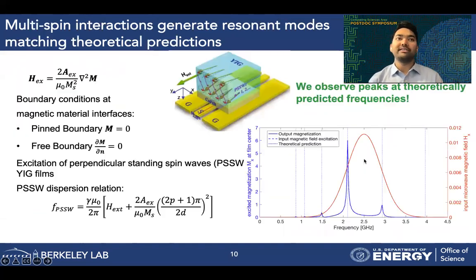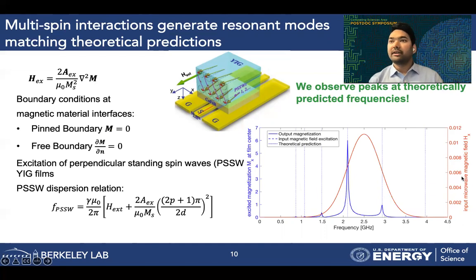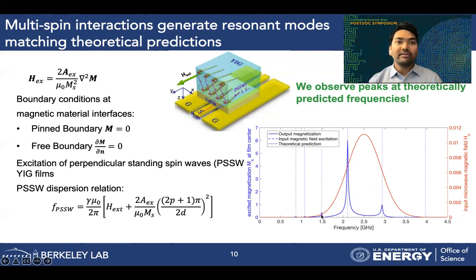Our recent effort has been to incorporate the exchange field term in Artemis, which would be key to modeling spintronic devices. This exchange field contains the Laplacian of magnetization M. In order to simulate a block of magnetic material inside our simulation domain, we have implemented pinned and free boundary conditions at the interface between the magnetic material and a vacuum. As a validation of our implementation of the exchange physics term, we studied the excitation of perpendicular standing spin waves in YIG films. The red curve shows the input microwave magnetic field, which excites these spin waves when asymmetric boundary conditions are used. The blue curve shows the final spectrum of magnetization, where the location of small peaks corresponds to higher order modes, and these peak locations match quite well with theoretically predicted frequencies from the dispersion relation for perpendicular standing spin waves.